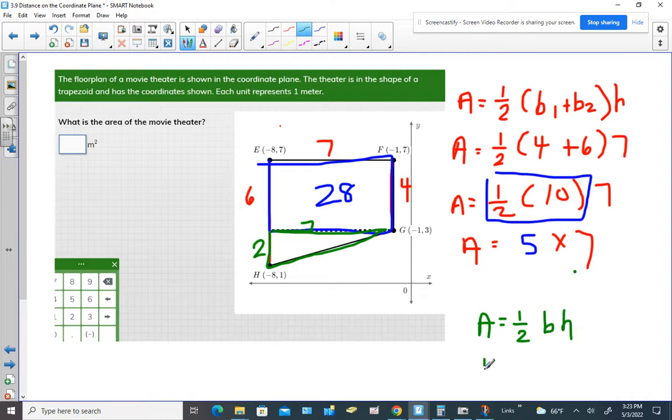Or area equals half of 7 times 2. And area equals, we take half of this, we get 1, and 1 times 7 is 7.